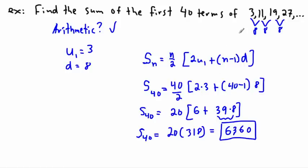That's way better than actually sitting there going 3 plus 11 plus 19 plus 27 plus dot dot dot, 40 times. That would be really boring. So instead, you can just use this formula.